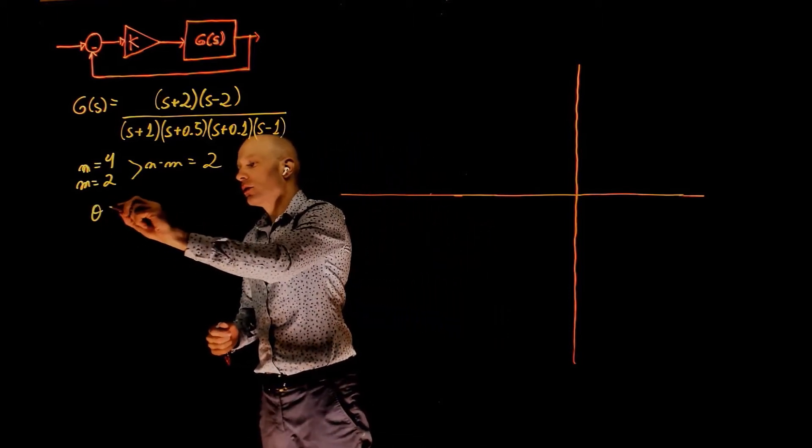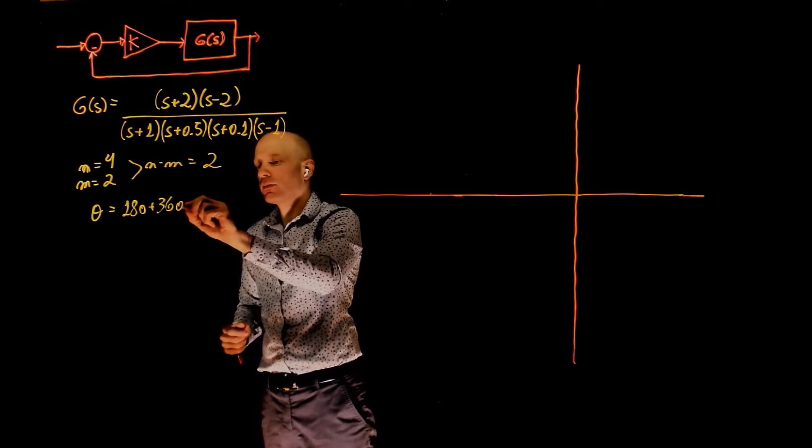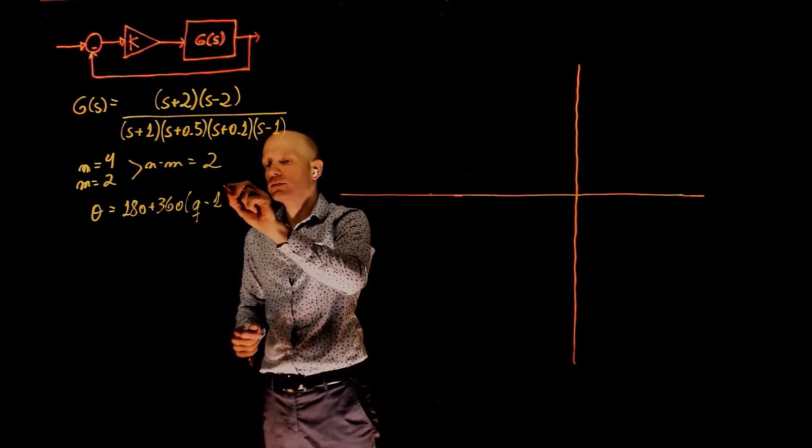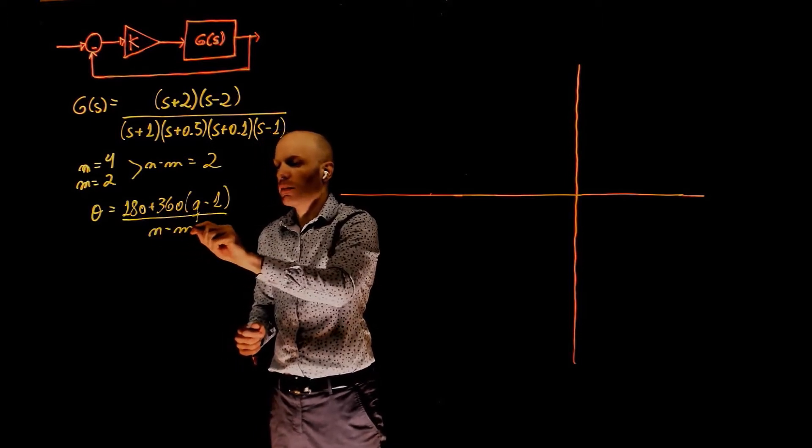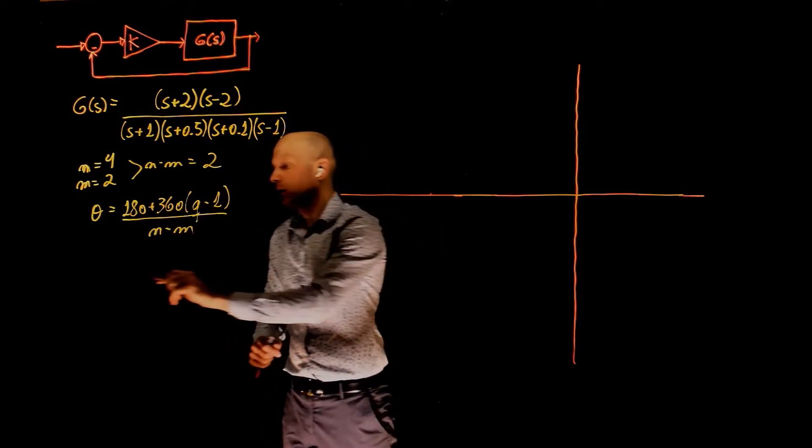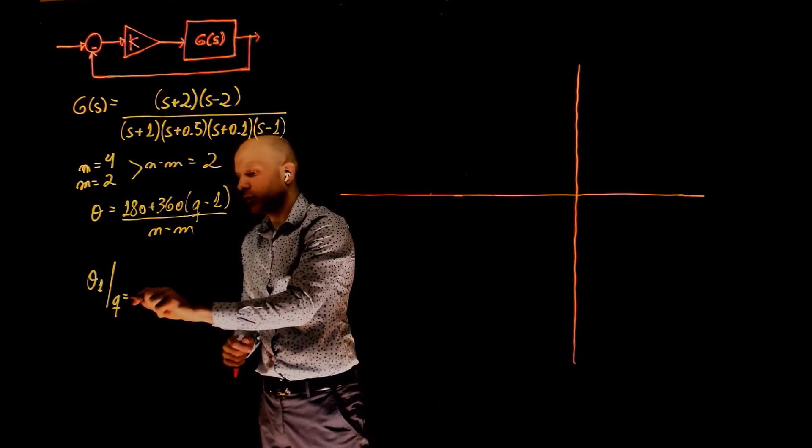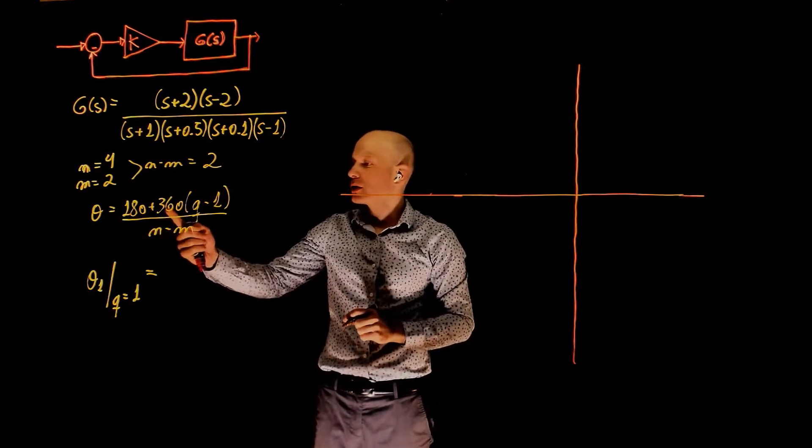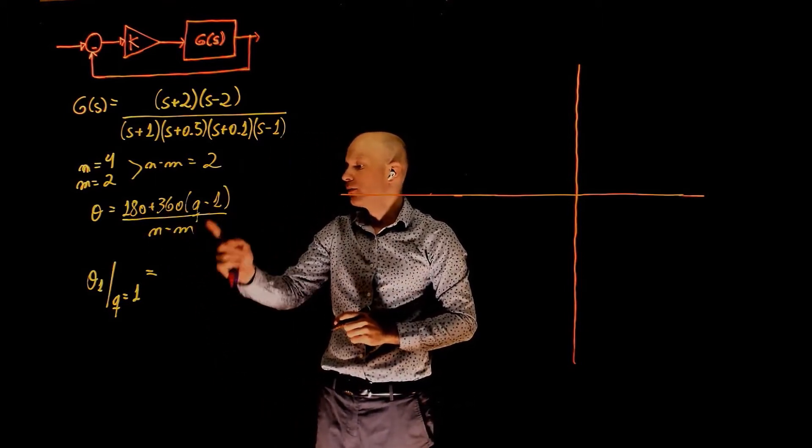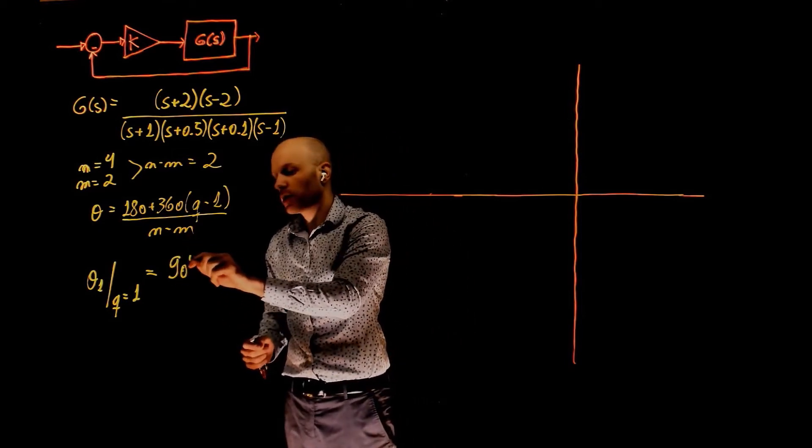Beta equals 180 plus 360 times q minus 1, divided by n minus m. Theta 1 is obtained when q equals 1, and this is 180 plus 360 times 0 divided by 2. This is positive 90 degrees.